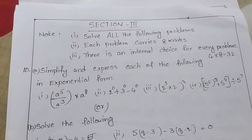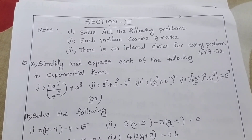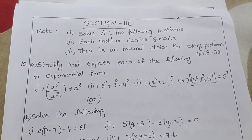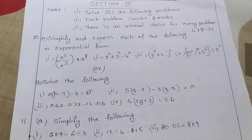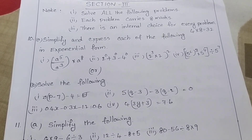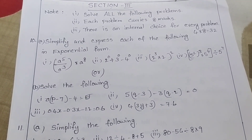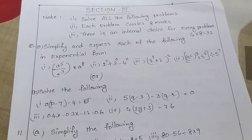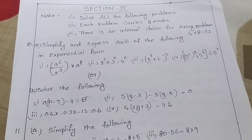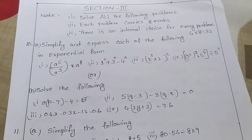Section 3: Solve the following problems. Each problem carries 8 marks. There is an internal choice for every problem. Simplify and express each of the following in exponential form: A power 5 by A power 3 into A power 8; 2 power 0 plus 3 power 0 minus 4 power 0; 2 power 3 into 2 whole power 2; and 2 whole cube plus 5 to the 4th divided by 5 to the power 4 of 7.